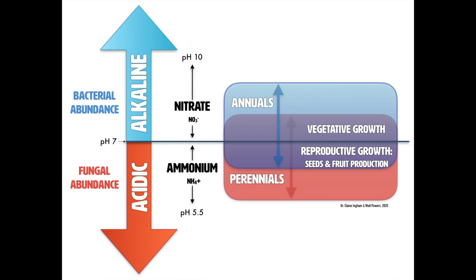The same thing can be said for planting an annual plant — maybe you have it more on the seven side, or maybe you're doing non-mycorrhizal and you're at 7.5. Even then, that's an average, and there will be acidic zones within that natural soil allowing the healthy plant to access both nitrate and ammonium.